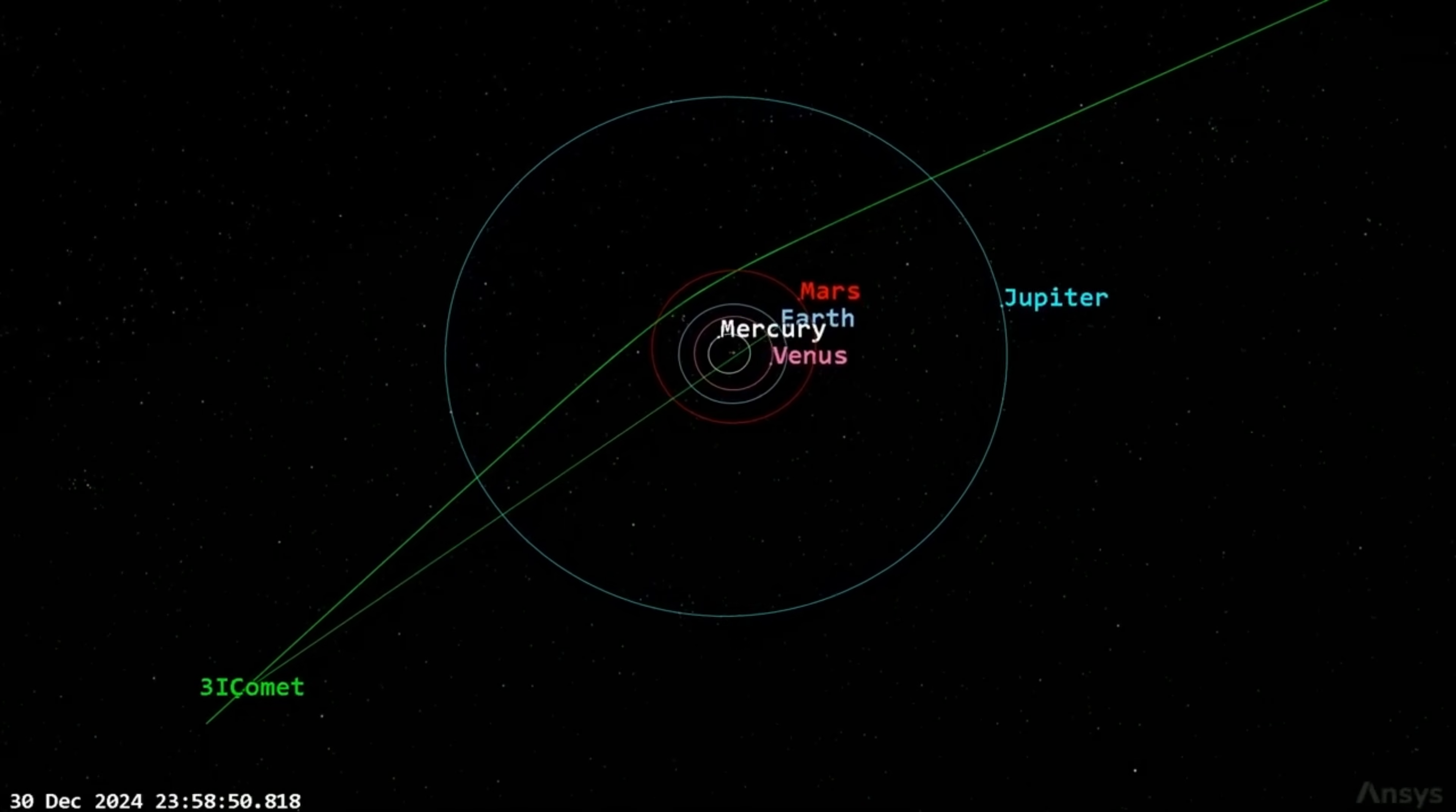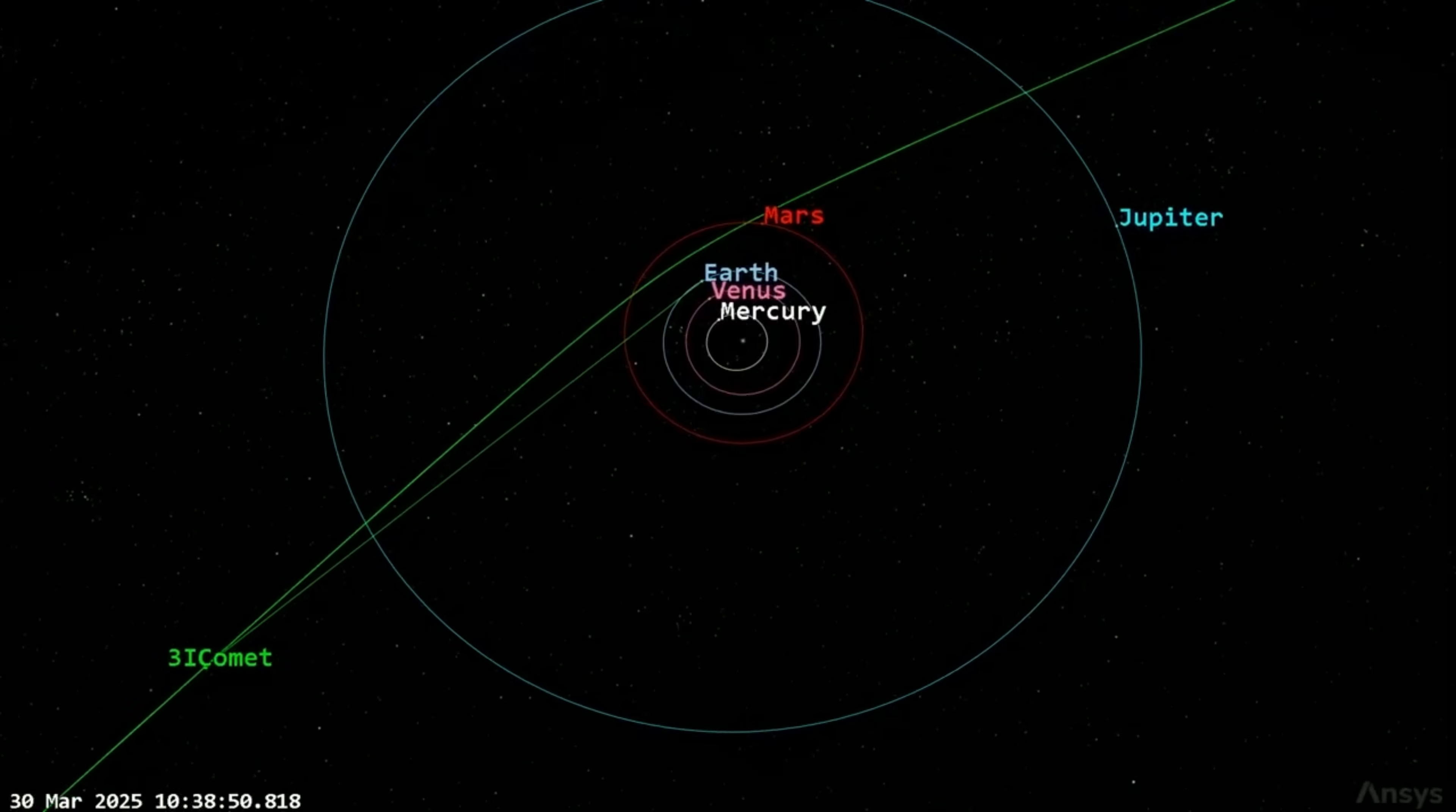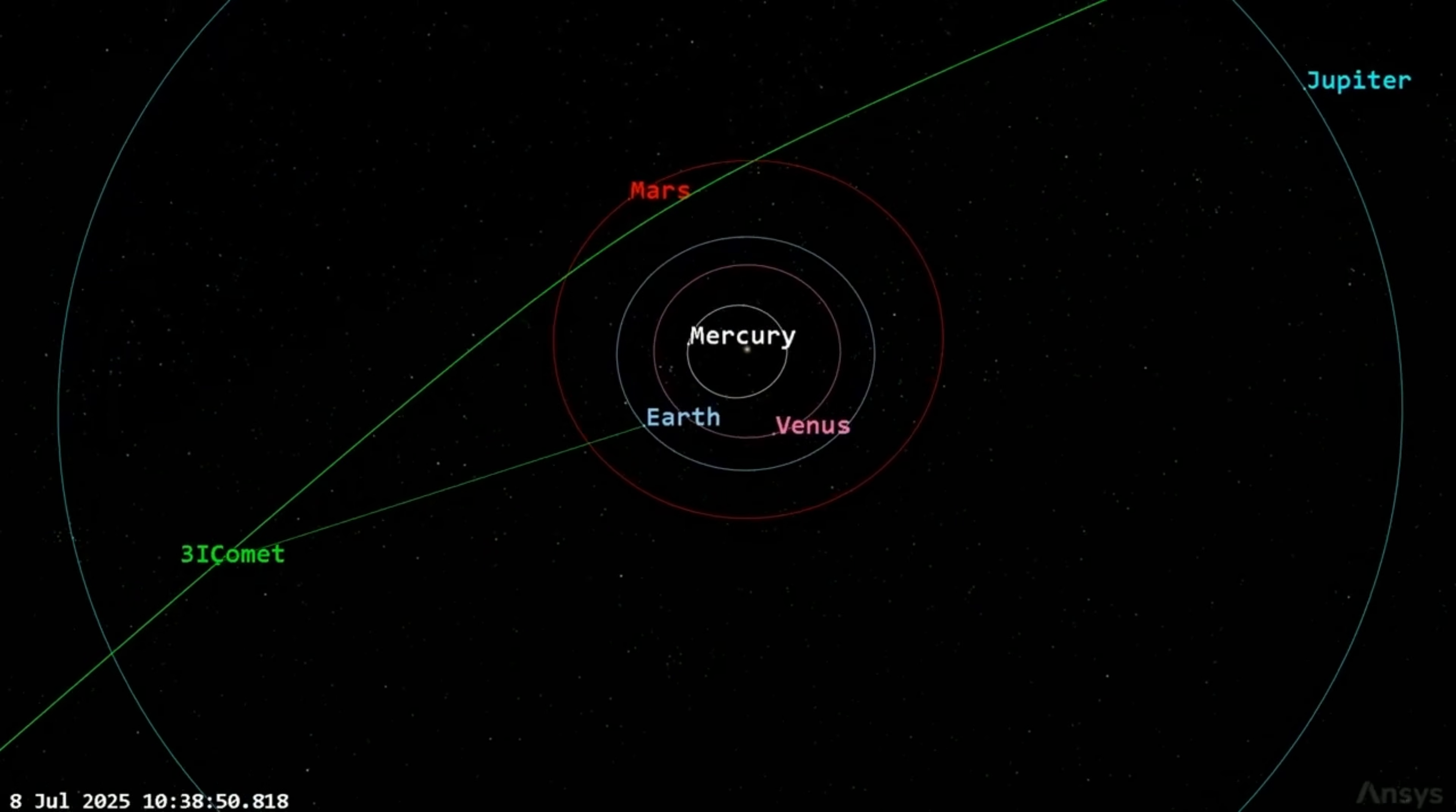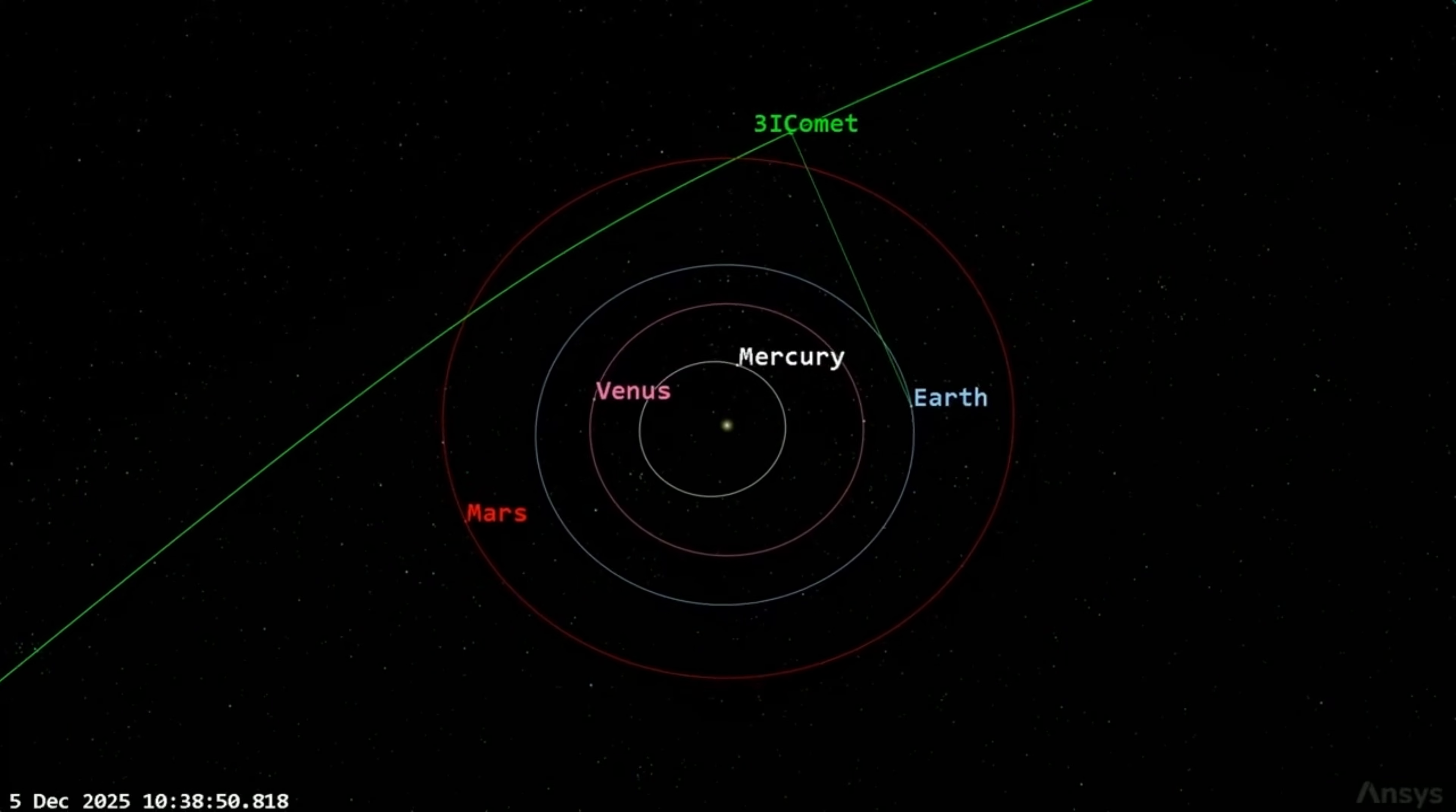The size and speed of 3I Atlas became a central point of intrigue soon after its discovery. Most comets are relatively small, typically measuring a few kilometers to tens of kilometers across, with a composition primarily made up of ice and dust. 3I Atlas, however, was observed to be significantly larger and denser than the typical comet. This discovery prompted immediate questions about its composition and structure. A larger object, by its very nature, has a different set of characteristics compared to smaller comets.